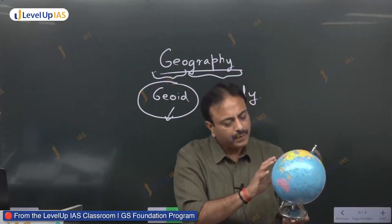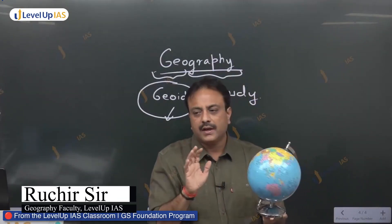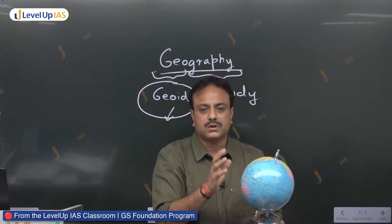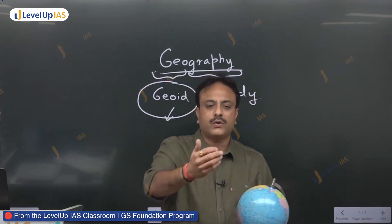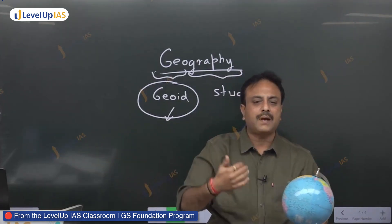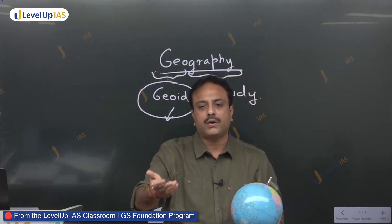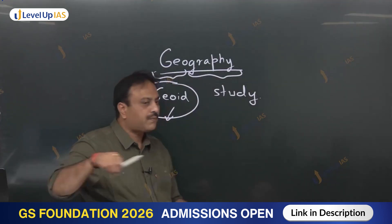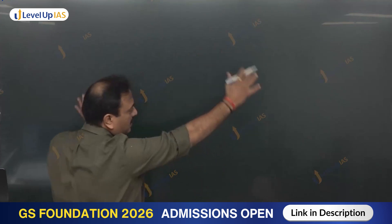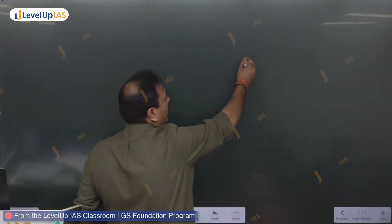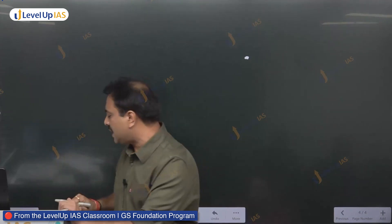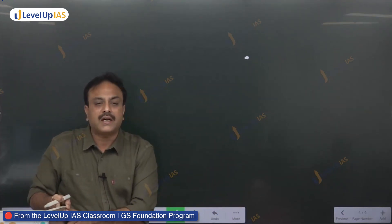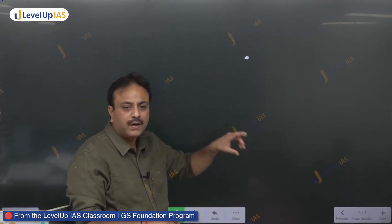Earth was formed, evolution started, human beings formed. When human beings existed on Earth, they had to find the location of a particular place. I am using myself as a reference point to say that you are in my front, at my back, on my right or on my left. So when using a reference point, on the surface of Earth, how to give the exact location of a particular point becomes slightly dicey. We are not having any other point or reference line.